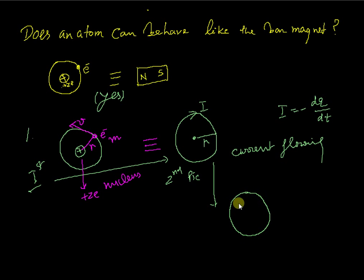If current is flowing here, so the upper face of this current loop will behave like the south pole.